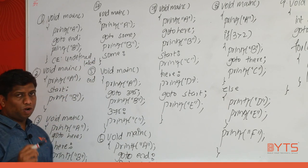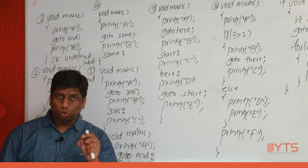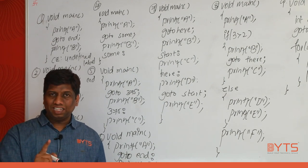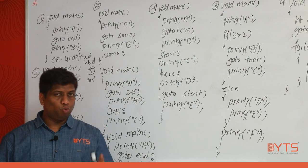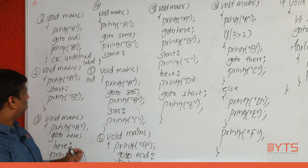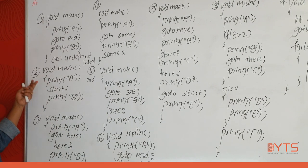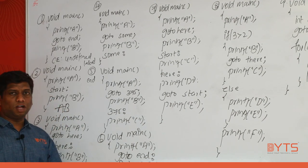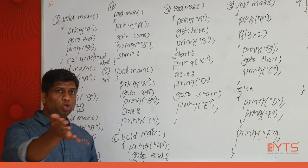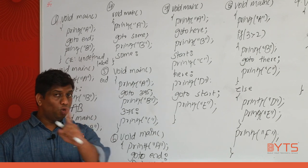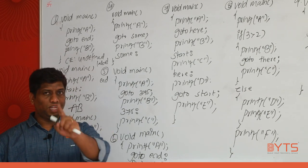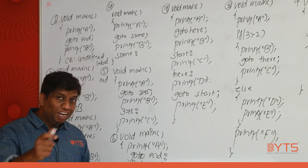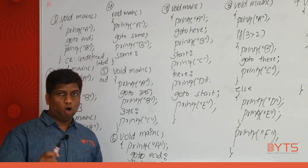Important point: whenever there is a goto statement, a corresponding label is compulsory. Just like else needs if, and do needs while — if you have goto, a label is compulsory. Conversely, if there is a label, goto is optional. If there is a goto, the label is compulsory.